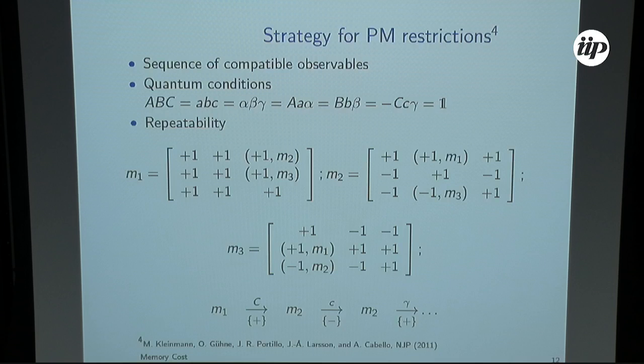Matthias Kleinmann and collaborators showed that you need at least three states to reproduce the scenario. They gave some lower bound, but of course, it's not the total model because you cannot achieve quantum correlation with these machines. This can be read like, for example, if I measure the last context, capital C, lowercase c, and gamma, starting in M1. I measure capital C, I get a plus one, and then update to state M2. I get a plus one, measure lowercase c, minus one, and then plus one again.